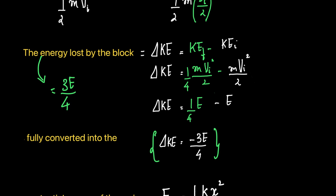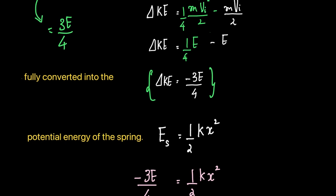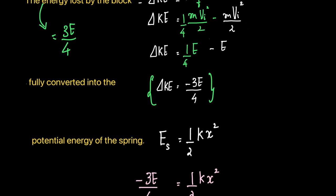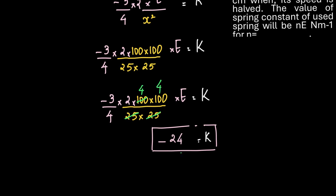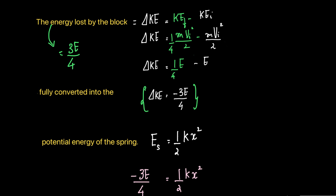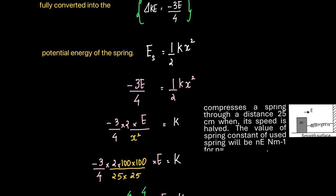If you write it as a negative change in kinetic energy, you will end up with a negative value for k. But if you correctly identify that the energy lost by the block is 3E/4, then all terms become positive. So we set energy lost by the block equal to the potential energy of the spring: 3E/4 = ½kx².